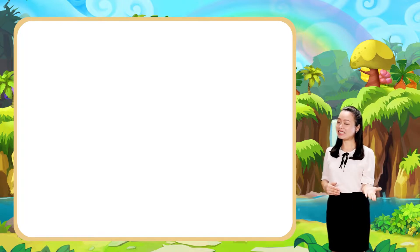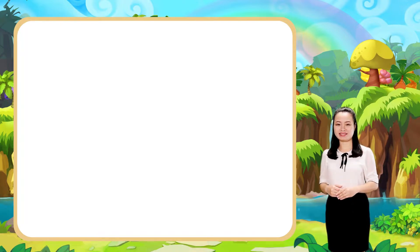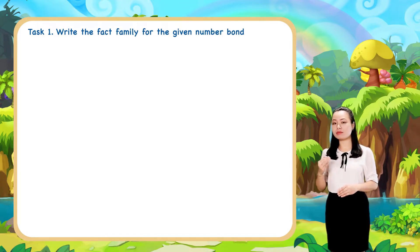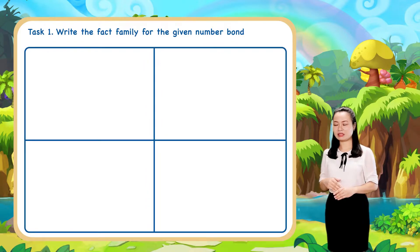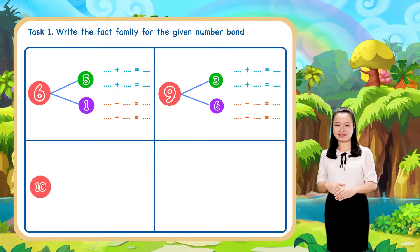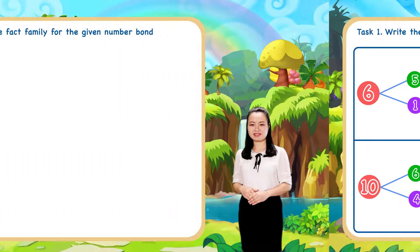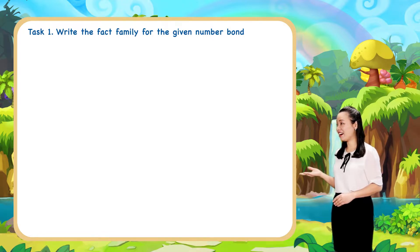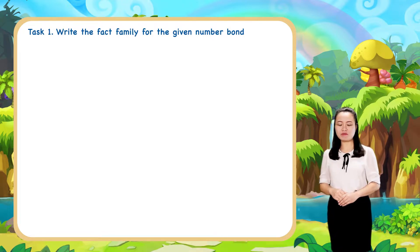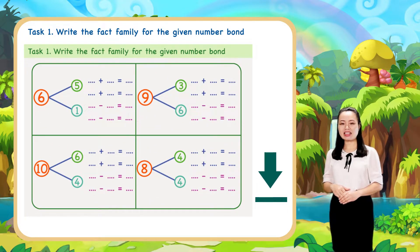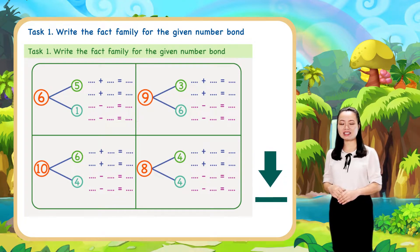Now, let's have some practice. Task 1: Write the fact family for the given number bond. To do this task, pause this video to download and print the worksheet below. Then, try to do it on your own. When you finish, replay the video to check the answers with me.